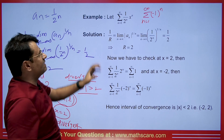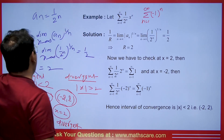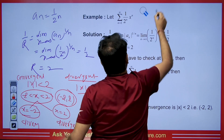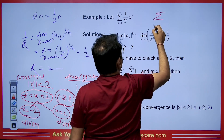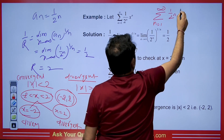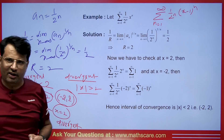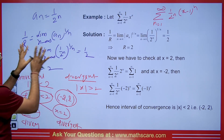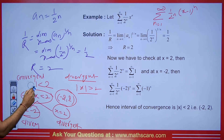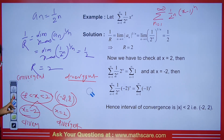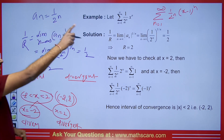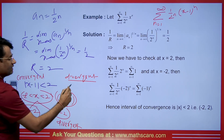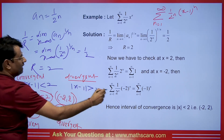Now the question changes slightly. Suppose instead we are given the series Σ from n=1 to infinity of (1/2ⁿ)(x − 1)ⁿ. If asked for its radius of convergence, you need not worry — the process is the same up to finding R = 2. The only change is that x is replaced by (x − 1), so the condition becomes |x − 1| < 2 for convergence and |x − 1| > 2 for divergence.